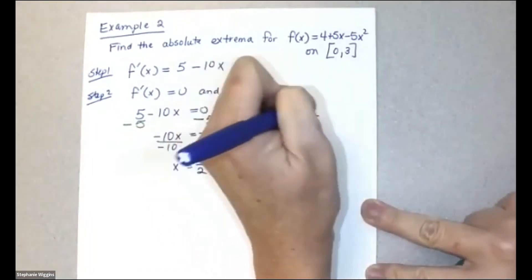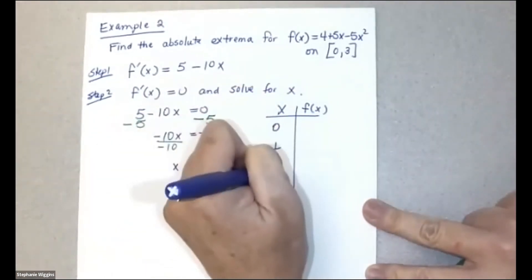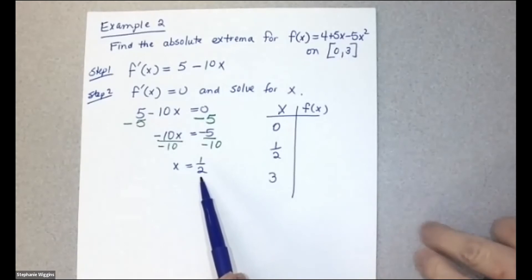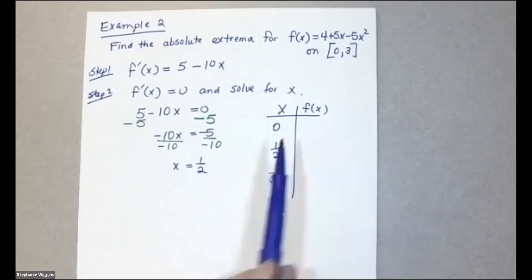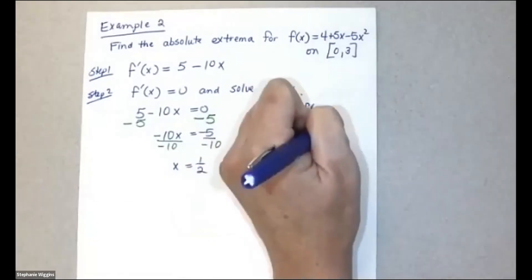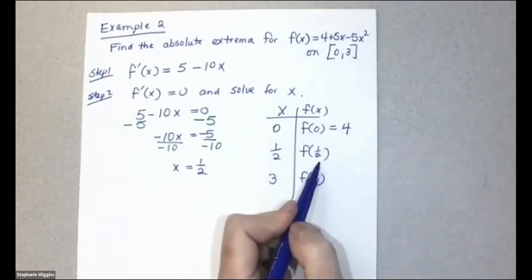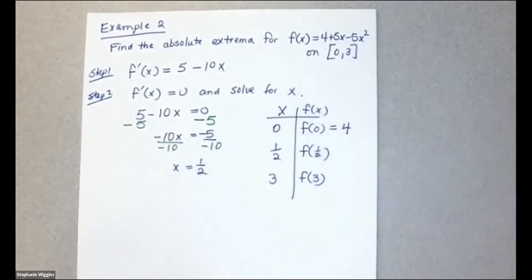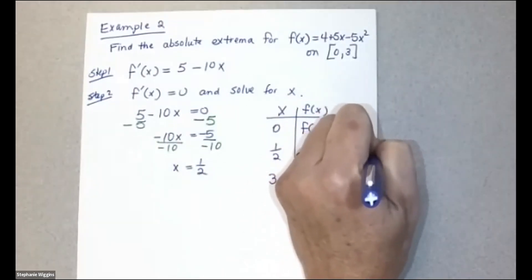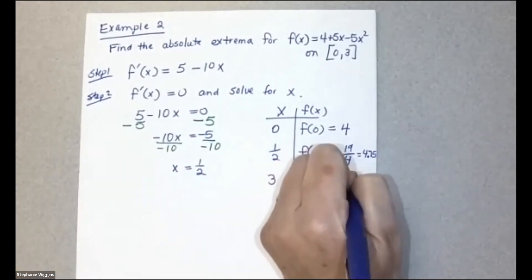We also include the endpoints 0 and 3 from the interval. In the table, list x = 0, 1/2, and 3 — the endpoints come from the interval, and 1/2 comes from setting the first derivative equal to zero. Plugging into the function: f(0) = 4, f(1/2) = 19/4, which is about 4.75, and f(3) = negative 26.